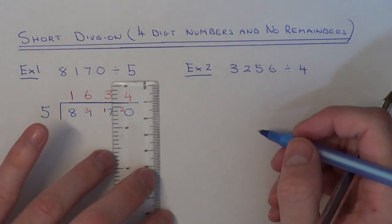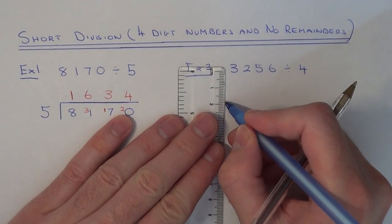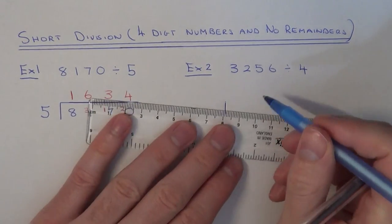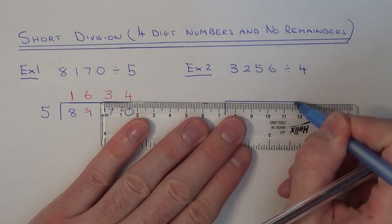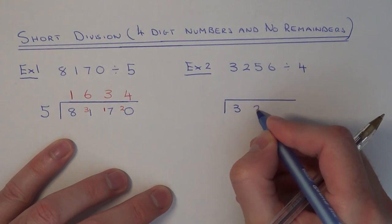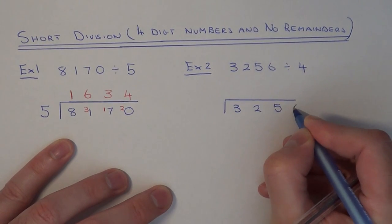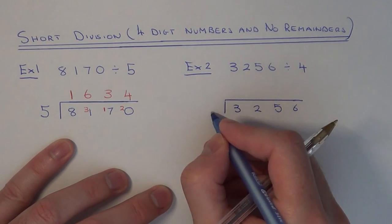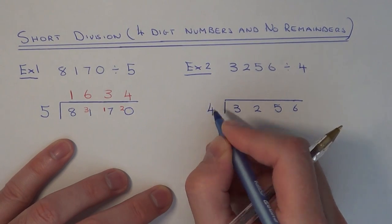Let's move on to example two. We need to set it out in the same way: a vertical line and a horizontal line. Put the number that you're going to divide underneath the horizontal line. The number which we're dividing by is 4, so put that at the start.